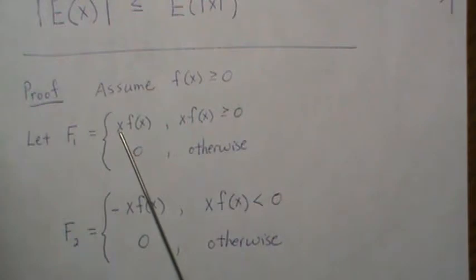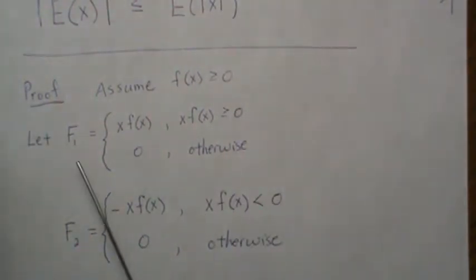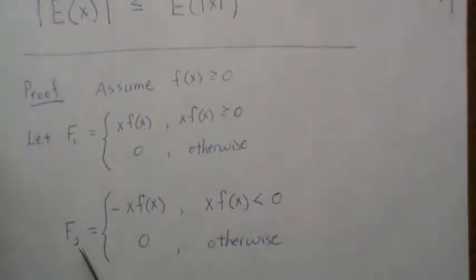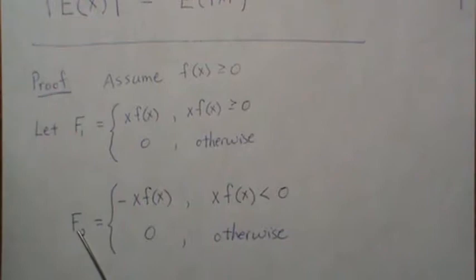And F2 is going to be the negative of that when it's negative, so both of these functions are positive functions, they're above zero.